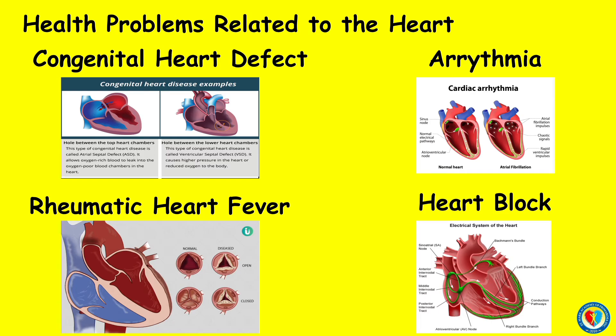Arrhythmia is a condition in which the heart beats with an irregular or abnormal rhythm. Rheumatic heart disease is a condition in which permanent damage to heart valves is caused by rheumatic fever. Heart block is a condition where the heart beats more slowly or with an abnormal rhythm.